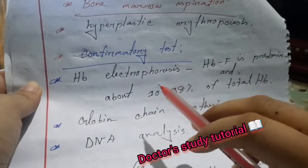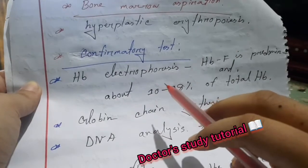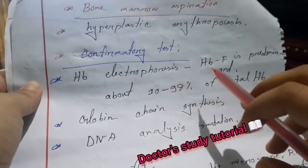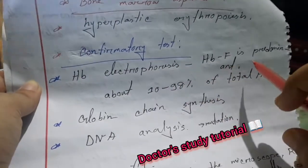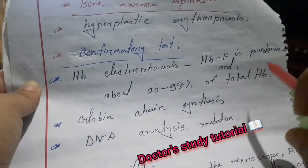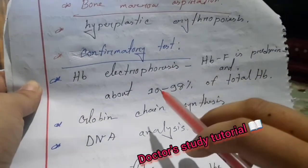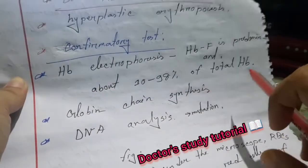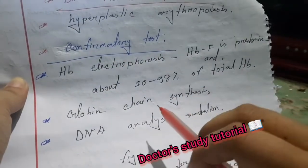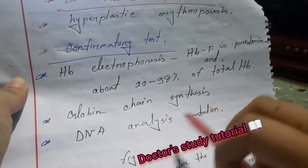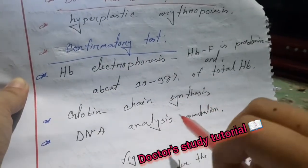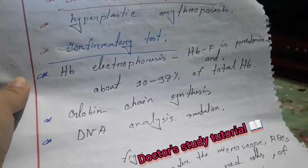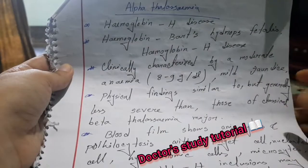The confirmatory test for beta thalassemia major involves hemoglobin electrophoresis: Hemoglobin F is predominant, comprising about 10 to 98% of the total hemoglobin. Additional confirmatory methods include globin chain synthesis analysis and DNA analysis.